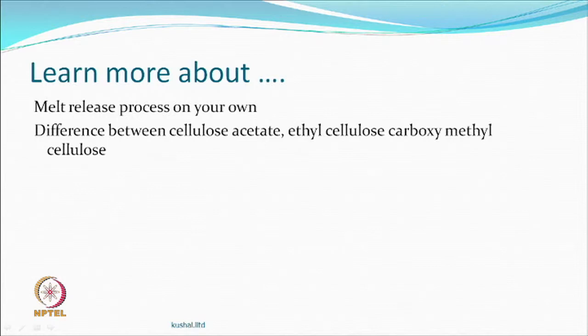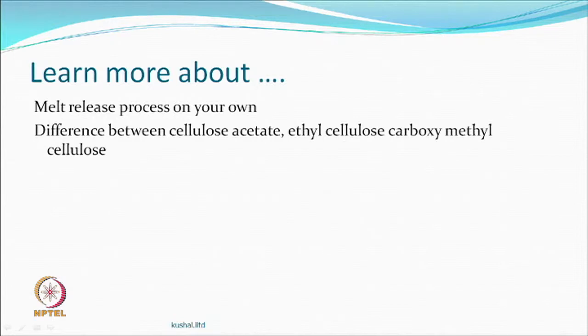Melt release is not so much of practical use, but people had tried this. You can try to get some papers and learn about it. Some of the binders we discussed — cellulose acetate, ethyl cellulose, carboxymethyl cellulose — you can look at the chemistry of these to know what differences they have, and try to correlate with their effect on the transfer rate during the sublimation process. So we stop this — the transfer printing topic we are now closing — and we can talk about the next topic which we will call digital printing.